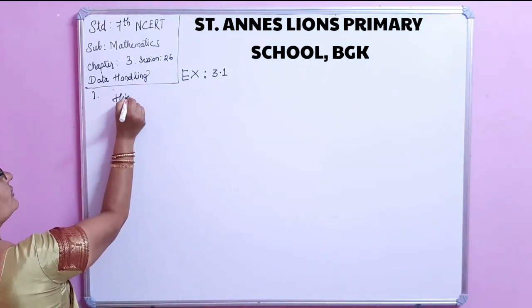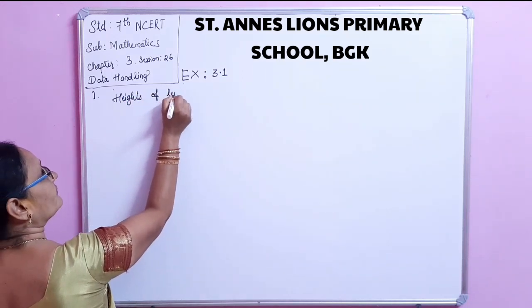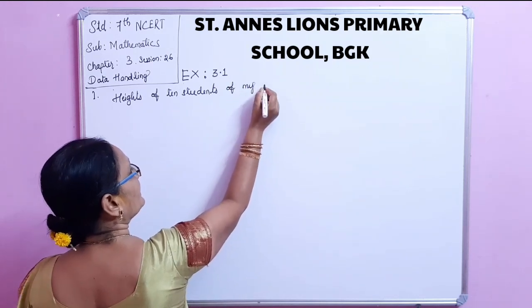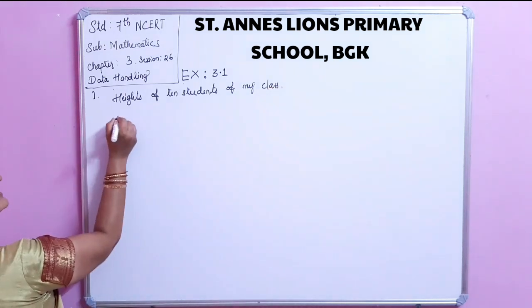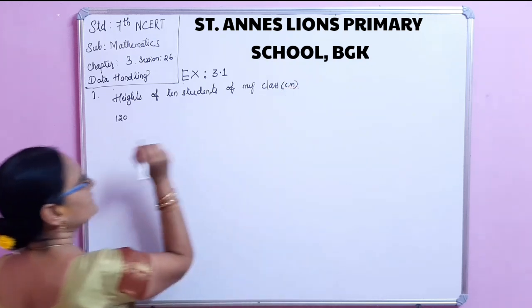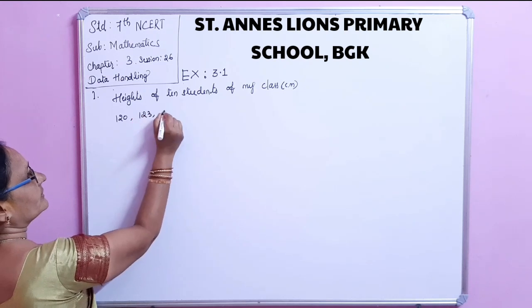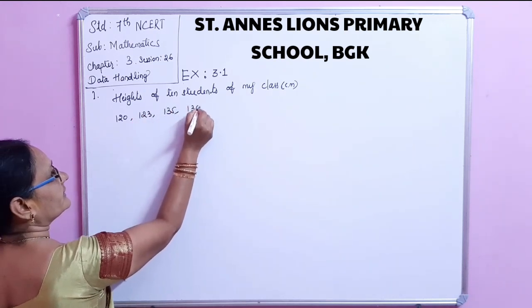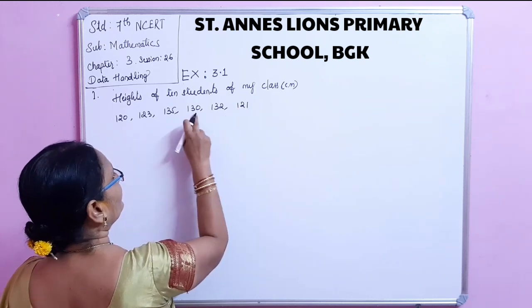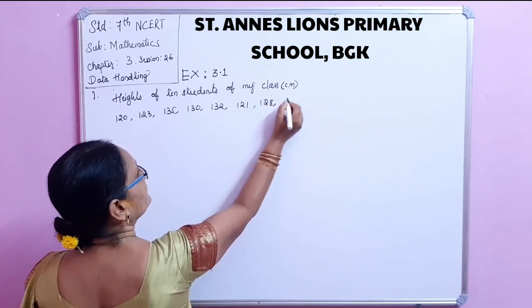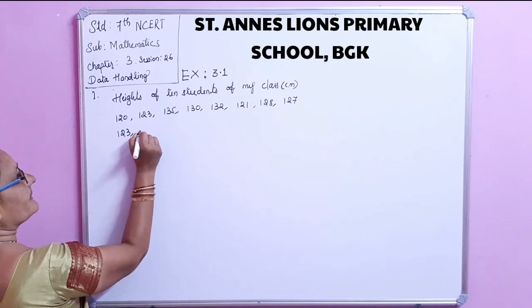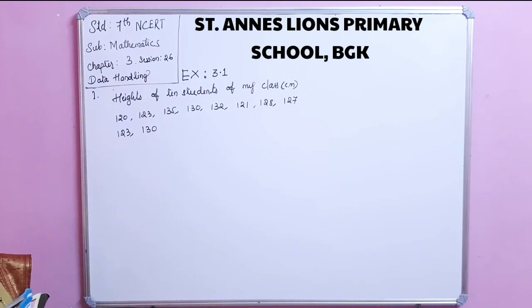Solution: Heights of ten students of my class, written approximately in centimetres: 120, 123, 135, 130, 132, 121, 123, 128, 127, 123, 130.